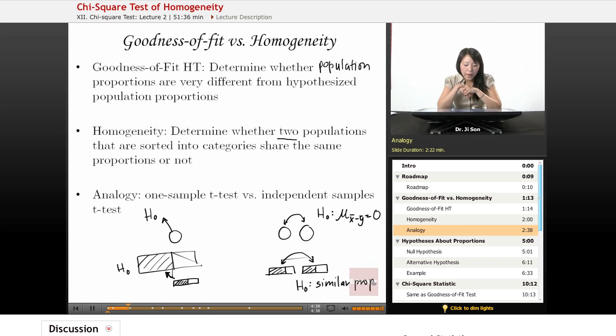And so in that way, I hope you can see that goodness of fit and homogeneity, they're ideas that we've looked at before, comparing one sample to a hypothesized population or comparing two samples to each other. But we've looked at it before not with proportions, but with means. And now we're looking at it with proportions.